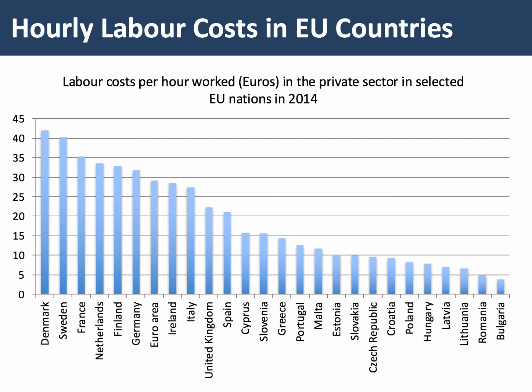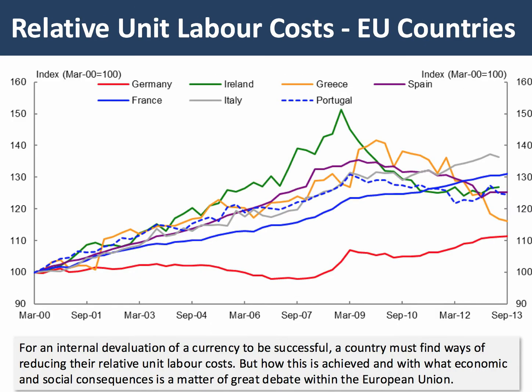Now, whilst labour costs are important, what's significant is the unit labour cost. That takes into account not just how much you're paying people in wages, but also how productive the workers are. This is a classic A2 data response chart. The chart shows an index of relative unit labour costs — relative, in other words, comparing one country with another. Unit labour costs are labour costs per unit of output. The base level for the index is labour costs in March of 2000, so you can see the index is starting off at 100, and then you can see what's happened to unit labour costs over the last 12 to 13 years.